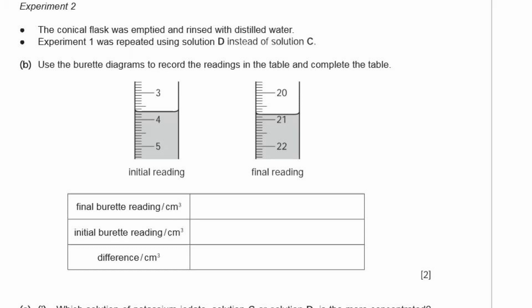Experiment 2. The conical flask was emptied and rinsed with distilled water. Experiment 1 was repeated using solution D instead of solution C. Use the burette diagrams to record the readings. The final reading is 20.8 cm³, the initial reading is 3.7 cm³, and the difference is 17.1 cm³. That should be some easy marks as long as you can read the burette.